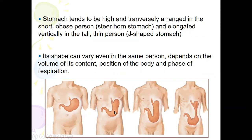The stomach is roughly J-shaped. The stomach tends to be high and transversely arranged in short, obese persons. For those who are obese and short, the stomach is usually in a steer-horn shape. For those who are tall and thin, the stomach is J-shaped.